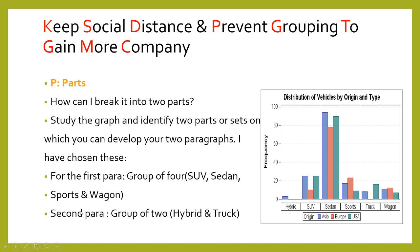P stands for Parts — how can we break the chart into two paragraphs? For the first paragraph, I have chosen the group of four: SUV, sedan, sports, and wagon. For the second paragraph, I have chosen hybrid and truck. The logic is that SUV, sedan, sports, and wagon are popular in Asia, Europe, and the USA, whereas hybrid is only in Asia and truck is only in Asia and the USA.